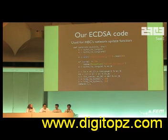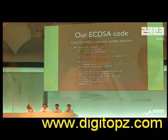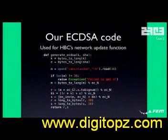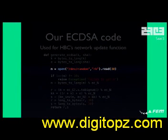We actually used EC-DSA in the Homebrew Channel's network update function so that someone can't own your Wii through a man-in-the-middle attack or something. So this is how we do it — we do the easy math. You can see the M times EG and all that. For M, we read cryptographically-secure numbers from /dev/random on Linux. That's what you're supposed to do.